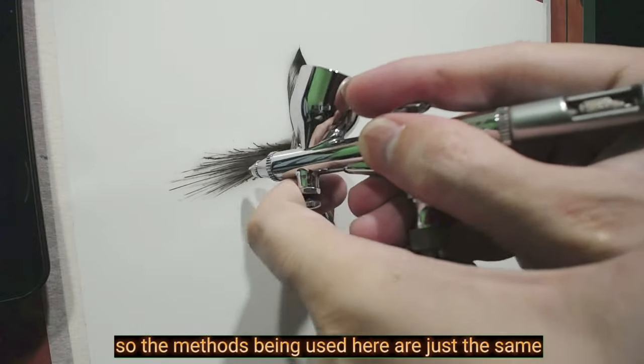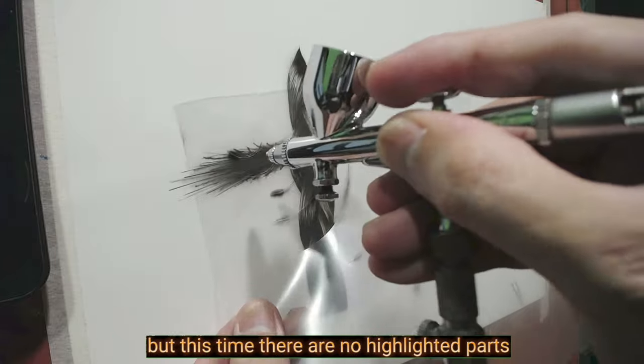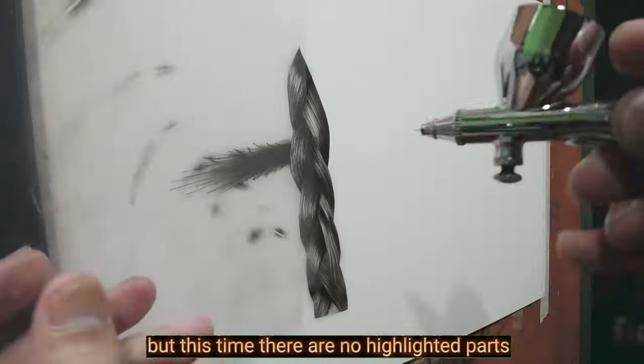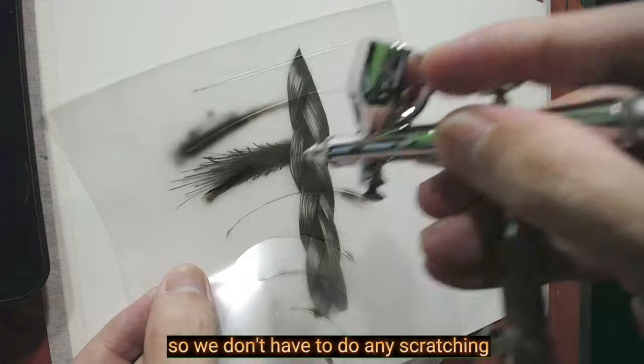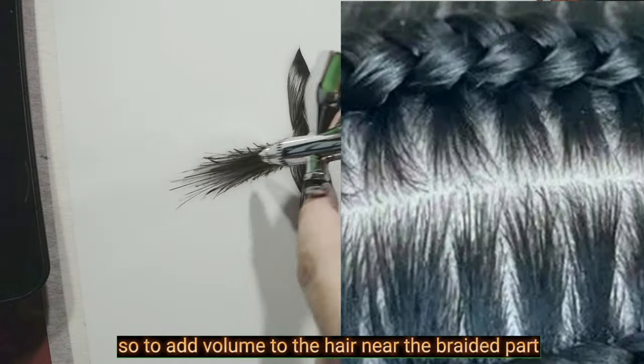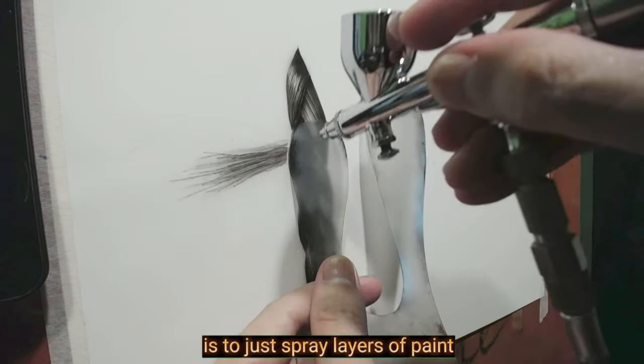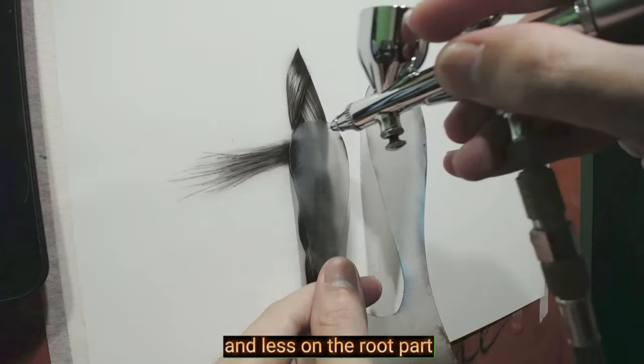So the methods being used here are just the same. But this time, there are no highlighted parts. So we don't have to do any scratching. So to add volume to the hair near the braided part is to just spray layers of paint and less on the root part.